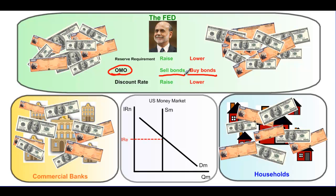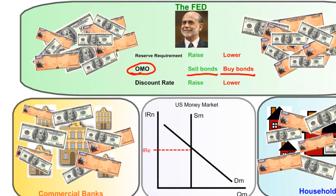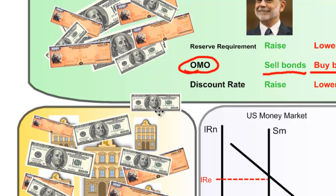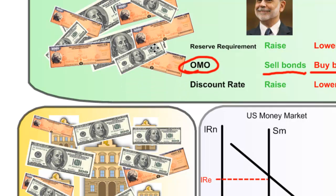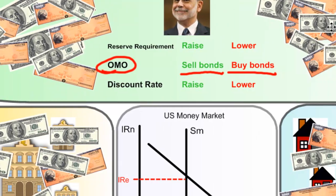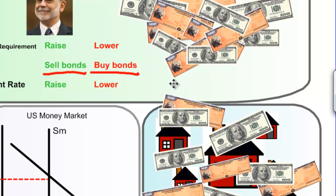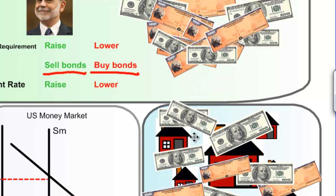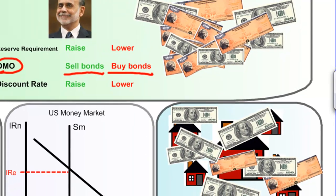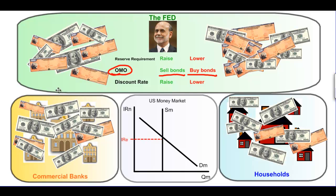Bonds are an illiquid asset — investments held by households and commercial banks that earn interest but cannot be spent on goods and services. If the Federal Reserve decides to buy bonds from households, it will give liquid cash in exchange for illiquid bonds. Bonds will flow into the Federal Reserve from commercial banks and households. For every $100 bill inserted into the economy, a $100 government bond is withdrawn.